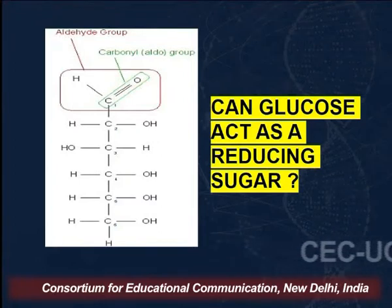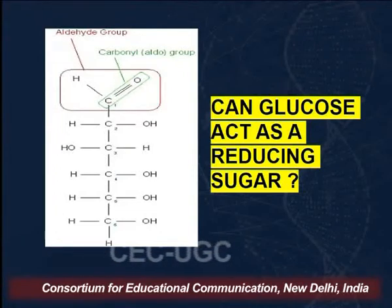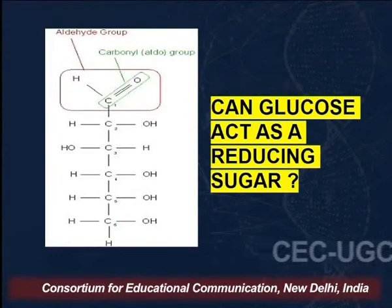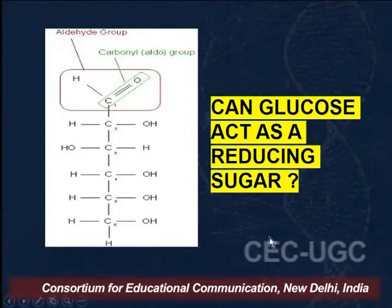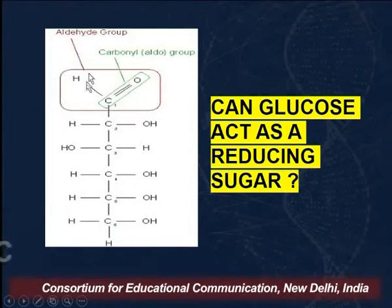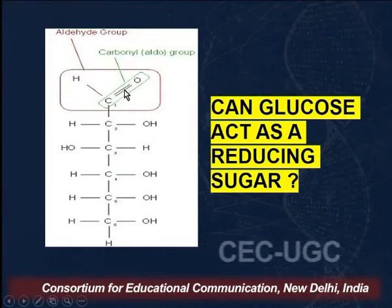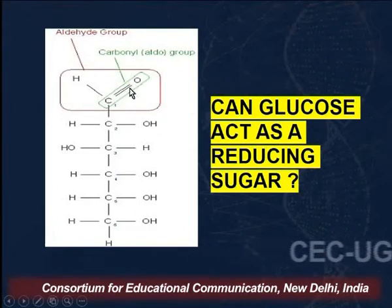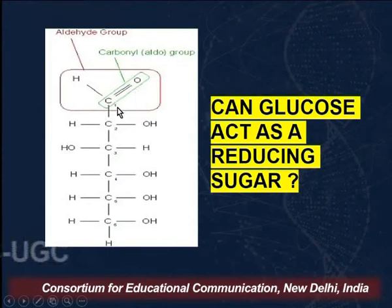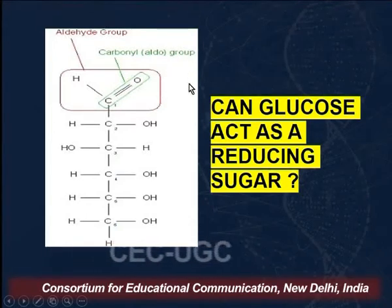You can see the structure of glucose on your slides. Glucose is an aldohexose, meaning it has an aldehydic functional group and five hydroxyl groups. Because it has an aldehydic group, the carbonyl group will donate electrons to an oxidizing agent and glucose will itself be oxidized to an aldonic acid — in this case, gluconic acid — while the oxidizing agent is reduced.